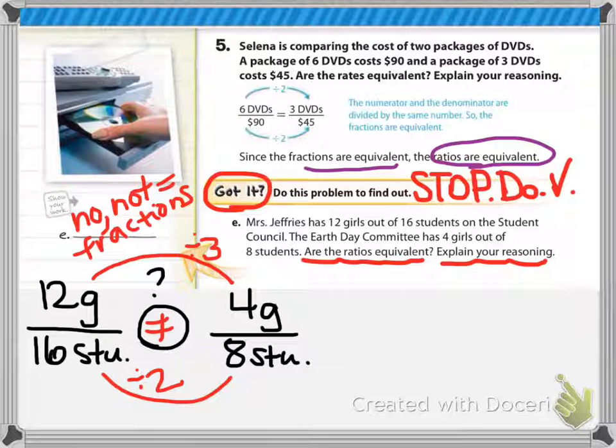All right, come back and check the got it. You can see 12 girls to 16 students versus 4 girls to 8 students. These are not the same ratio. Moving along the top you would have to divide by 3, but moving along the bottom you would have to divide by 2.